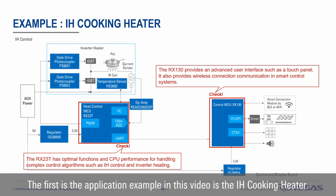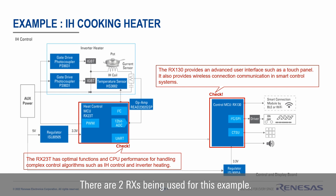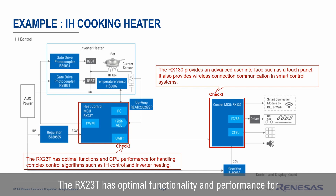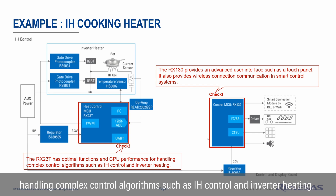The first application example in this video is the IH cooking heater. There are 2 RX MCUs being used in this example. The first is the RX23T, which is being used for the thermal control unit. The RX23T has optimal functionalities and performance for handling complex control algorithms such as IH control and inverter heating.